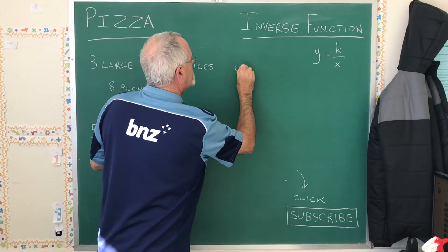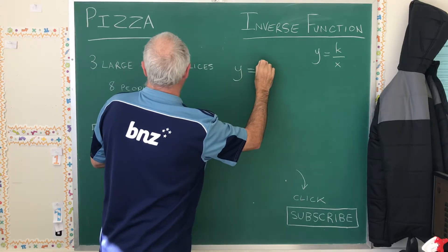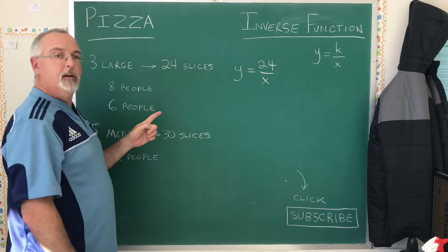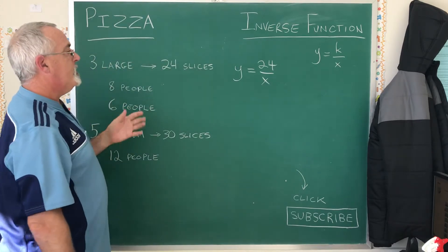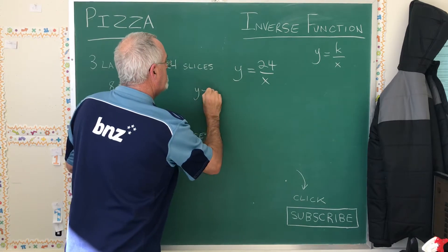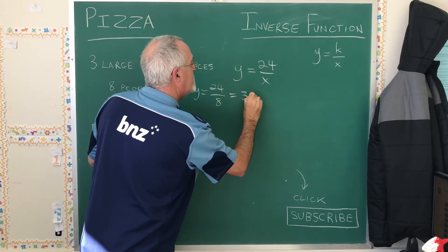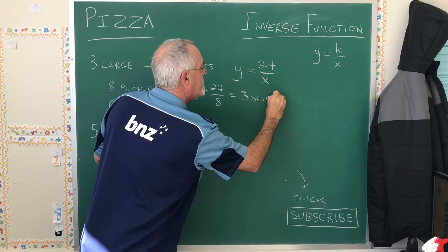y equals k over x will become y equals 24 over x in this case. So if eight people are going to share the pizza, y is equal to 24 divided by 8, which is three slices each.